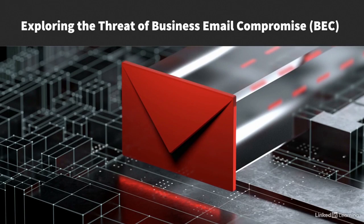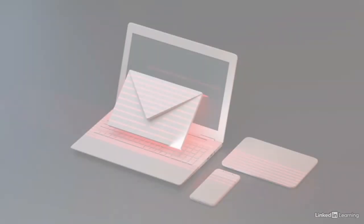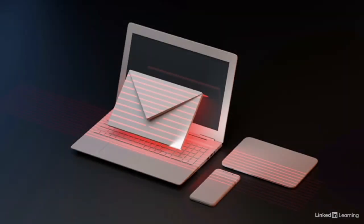Business email compromise, or BEC for short, is a cybercrime that can cost organizations a lot of money if they become victims. BEC attacks usually start with criminals hacking into email accounts and using them to pretend to be someone they're not. The criminals will then use the hacked email accounts to impersonate C-level executives, finance teams, or even suppliers. Their goal is to trick employees into making large payments or changing the payment process to send funds to a scammer's bank account.